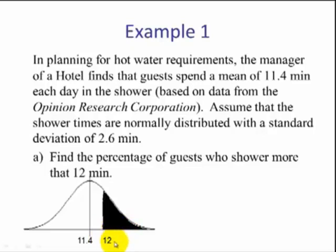Our next step is to change 12 to a z-score. We take 12 minus the mean divided by the standard deviation. We get a z-score of 0.23.